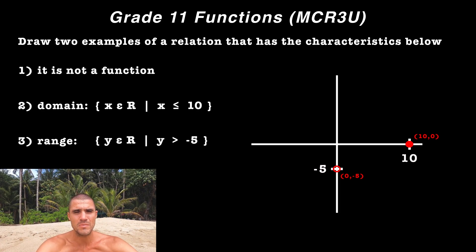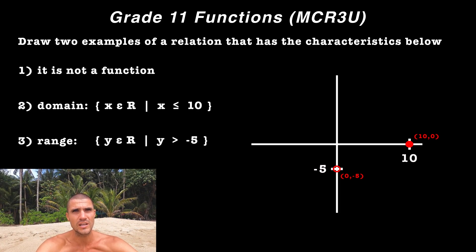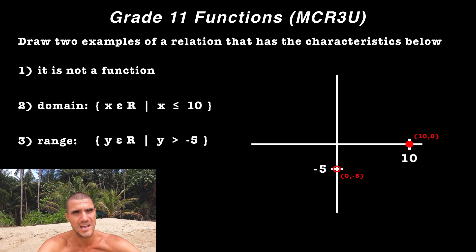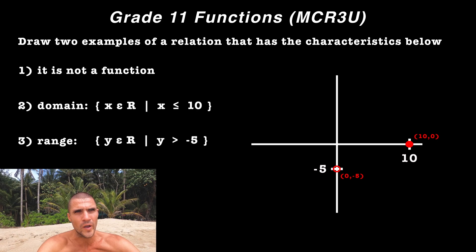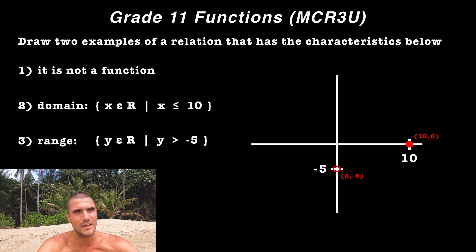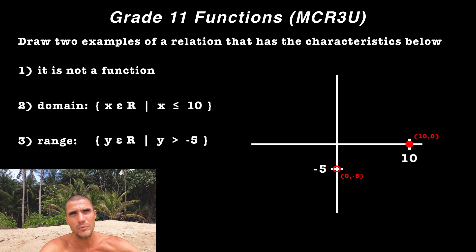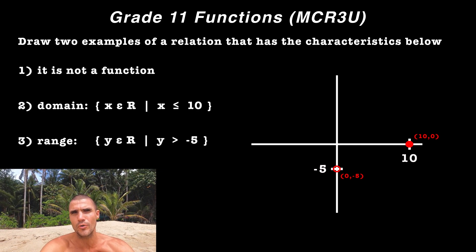And then the last thing to make sure of when we draw this relation is that it's not going to be a function, meaning that it's going to fail the vertical line test, meaning that at some point, there has to be an X value that's going to have multiple Y values.